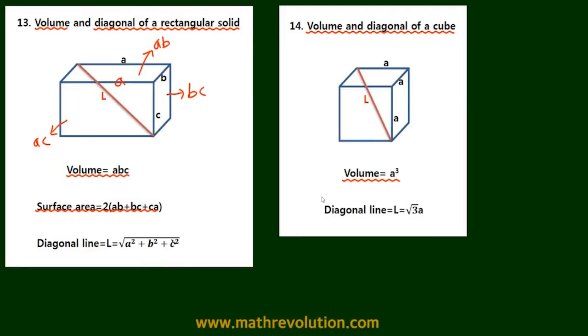Now let's get the diagonal line. We know that all angles are 90 degrees in a rectangular solid. So if we draw a line on the surface of ab, a diagonal line like this, then the length of this line you can get using the Pythagoras theorem.